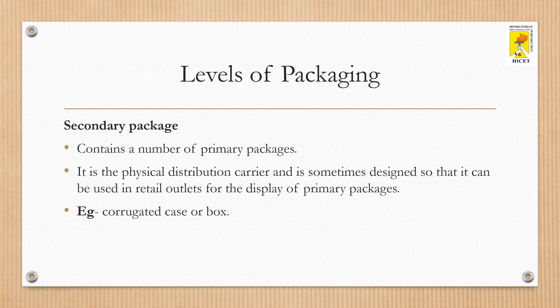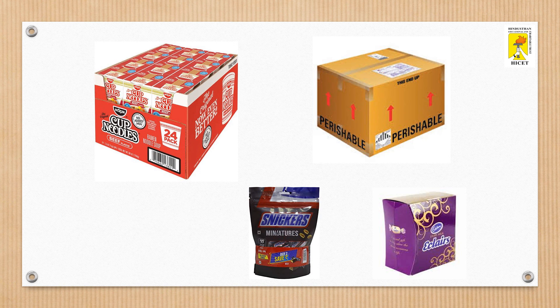A secondary package contains a number of primary packages. It acts as a physical distribution carrier and is sometimes designed so that it can be used in retail outlets for the display of primary packages. An example would be corrugated cases or works.